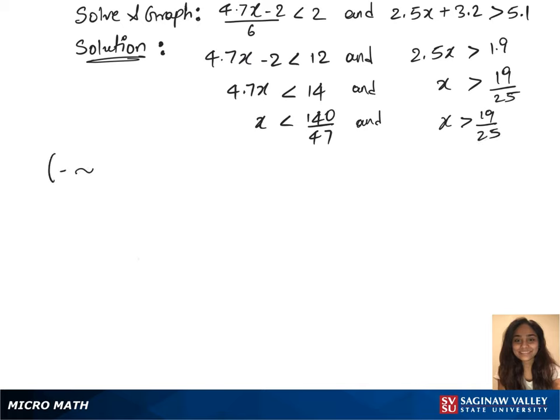In our first inequality we have the interval notation minus infinity to 140 over 47. We'll plot this on the graph, look for 140 over 47, mark it, and this is extending towards minus infinity.